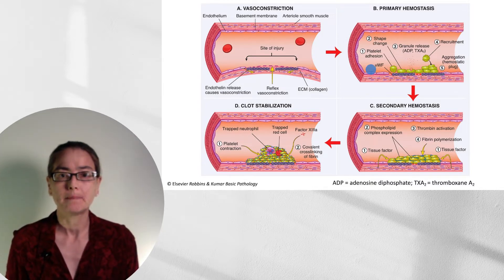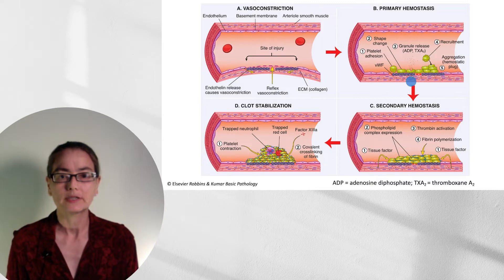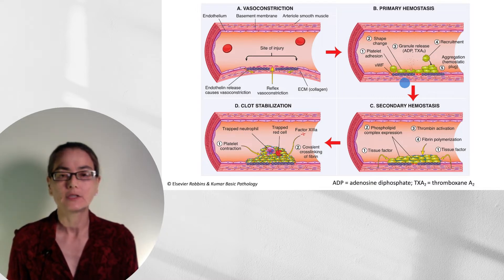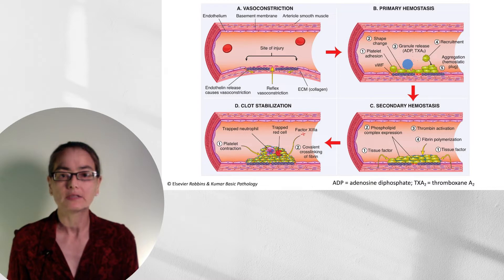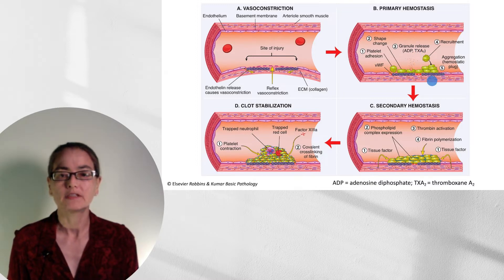Next, platelets are going to adhere to the subendothelial von Willebrand's factor. When the platelets are activated, they undergo a shape change — they go from being flat and disc-like to looking somewhat like sea urchins, very spiky, with a lot of surface area. The surface area is important for propagation of this clot. The activated platelets then release their granules, including adenosine diphosphate and thromboxane A2, which stimulate further recruitment and aggregation of the hemostatic plug.